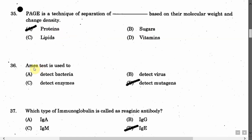The next question is: Ames test is used to — Option A: Detect bacteria. Option B: Detect virus. Option C: Detect enzymes. Option D: Detect mutagens. The correct answer is Option D, that is it detects mutagens.